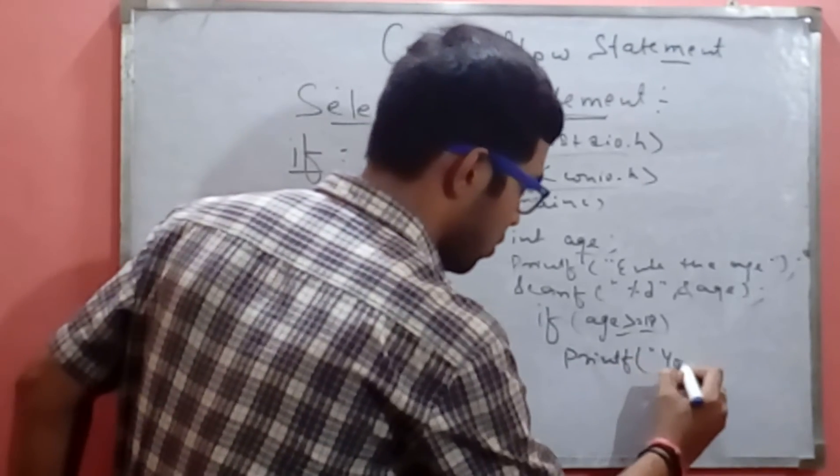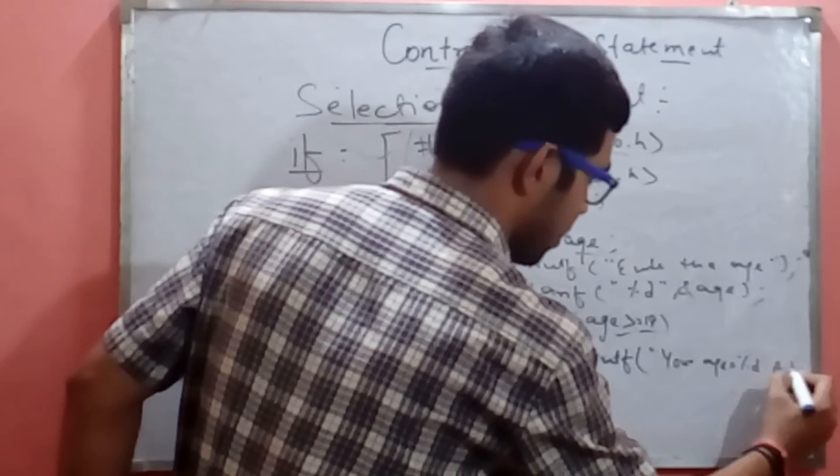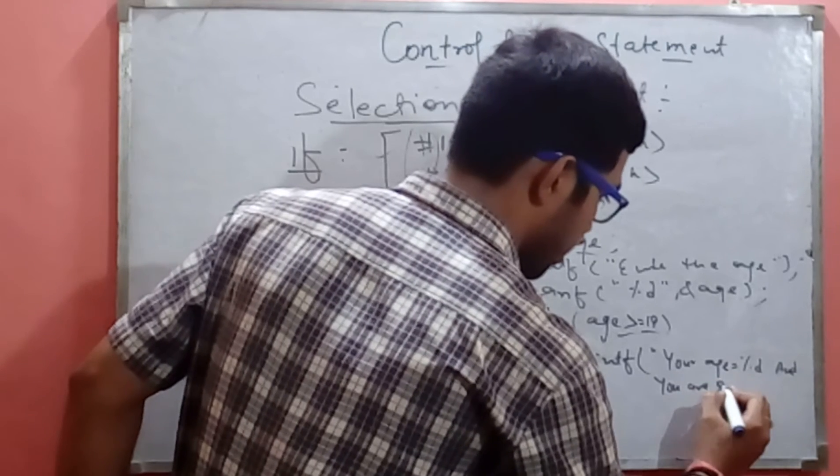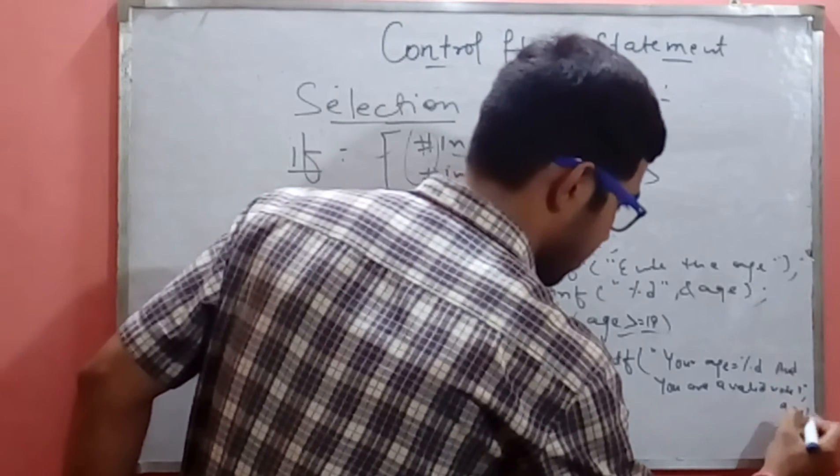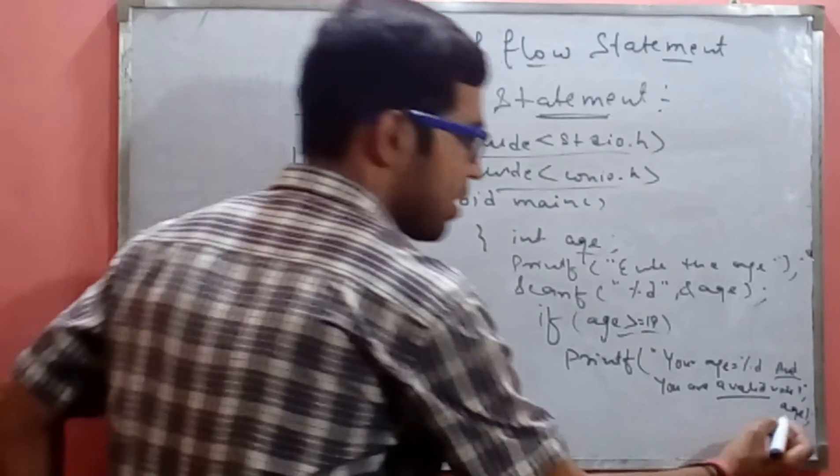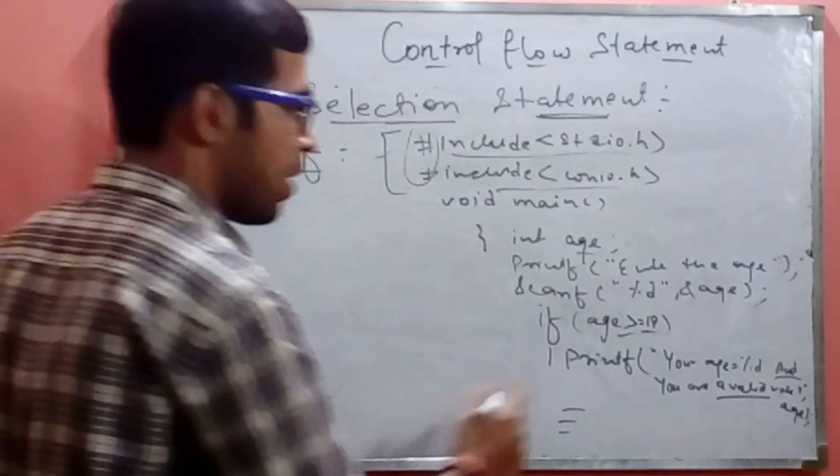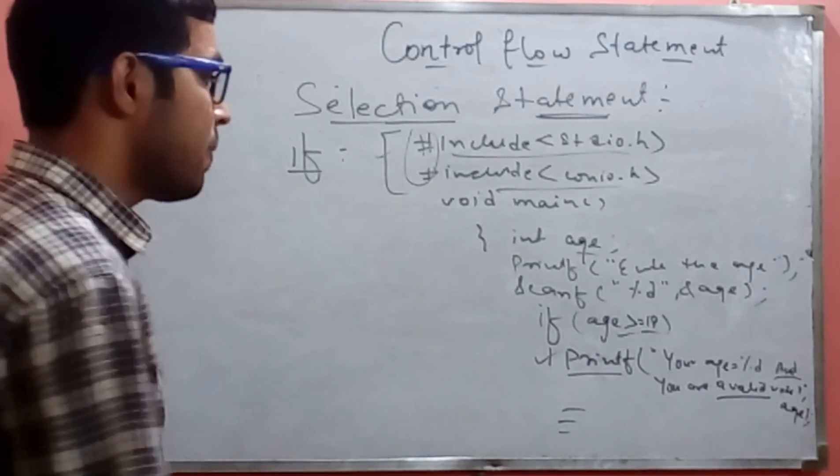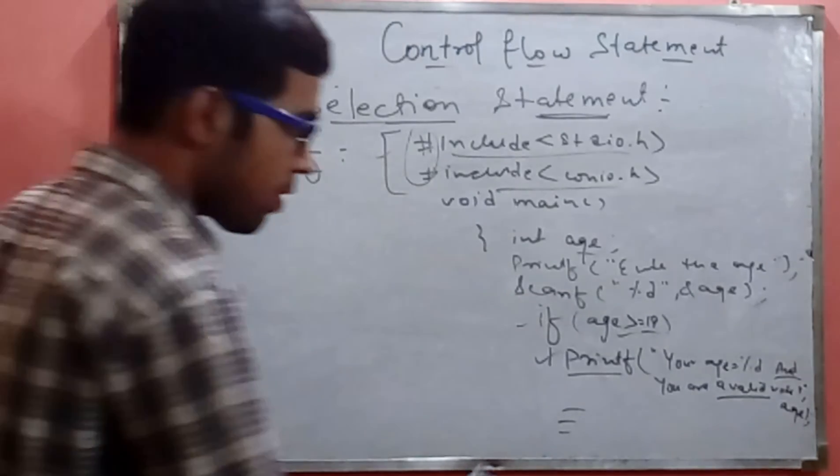Printf your age equals to percent d and you are a valid voter, comma age.